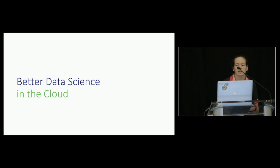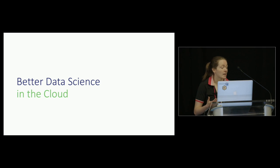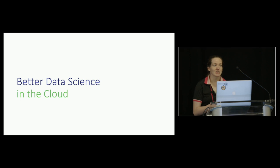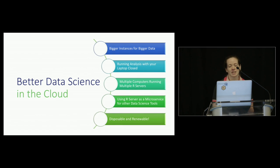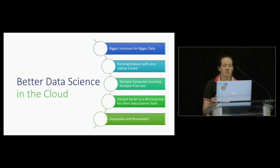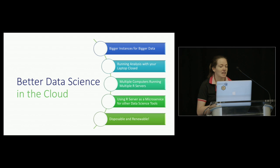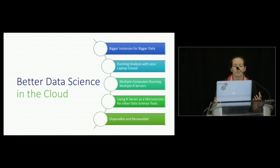I want to end by talking about how working in the cloud has made me a better data scientist. One of the first things I did when I started at B2-3 was install RStudio and R on my laptop, and it took me a very long time to leave that safety net. There are standard perks like bigger instance sizes for bigger data and running analysis while your laptop is closed. But there are also things people don't generally talk about, like having multiple computers at your disposal, running multiple R servers at the same time, and using R server as a microservice for other data tools.